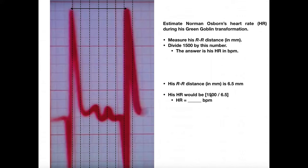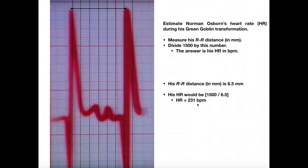So the Green Goblin's RR distance is 6.5 millimeters. I take 1,500 and divide by 6.5, rounding to the nearest whole number, and his heart rate comes out to 231 beats per minute — which is really, really fast. Most people don't even have a maximum heart rate that high. In exercise physiology, maximum heart rate is estimated by 220 minus age. Norman Osborn is probably around 50 years old, making this absolutely ridiculous. Hopefully this gives you a good understanding of how to determine a person's heart rate from their electrocardiogram. Please like this video and subscribe for future videos and notifications — thank you very much.